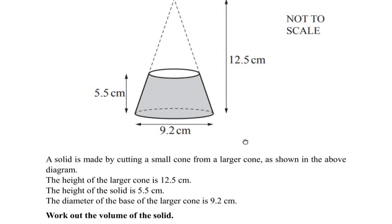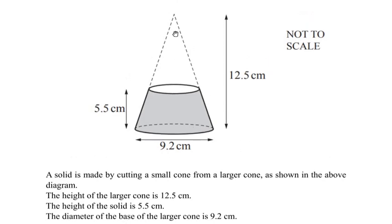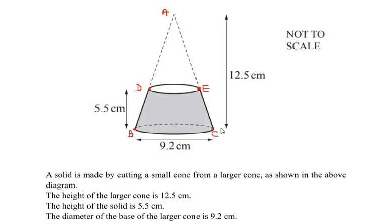In this question, a small cone has been cut out of the larger cone to get a solid, which is the shaded region in the diagram. We have to find the volume of this shaded region. Let us label the diagram first: ADE is the small cone which we cut out, and BD and EC come from the bigger cone ABC.